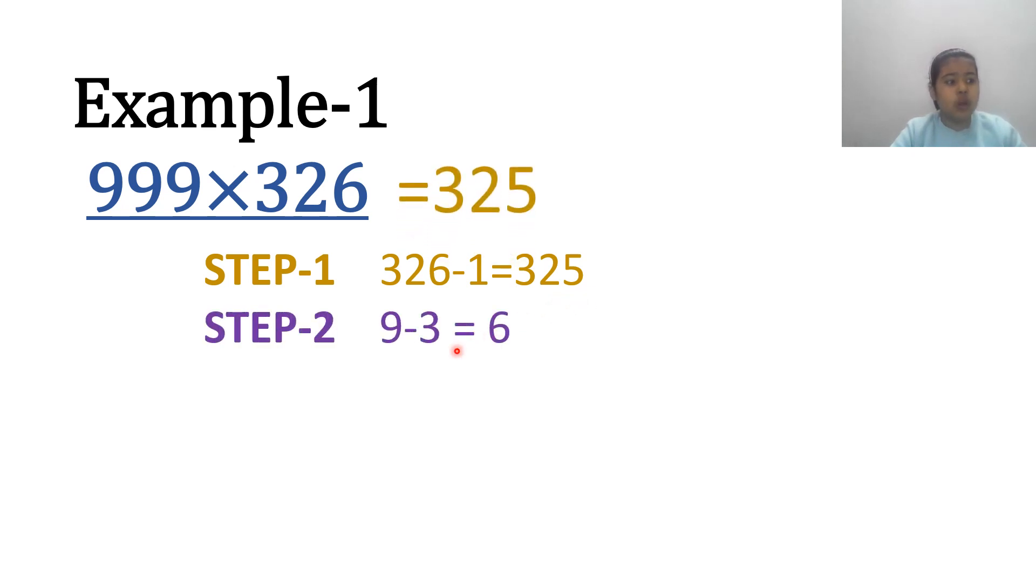Step 2. Take the leftmost 9 and subtract 3 out of it. So, 9 minus 3 equals 6. Write down this 6 immediately after 325. Step 3. Take the middle 9 and subtract 2. That is, 9 minus 2 equals 7. Write down this 7 immediately after 6.